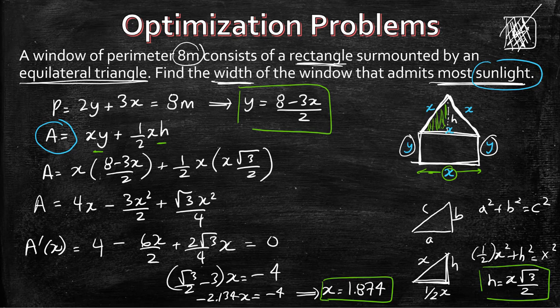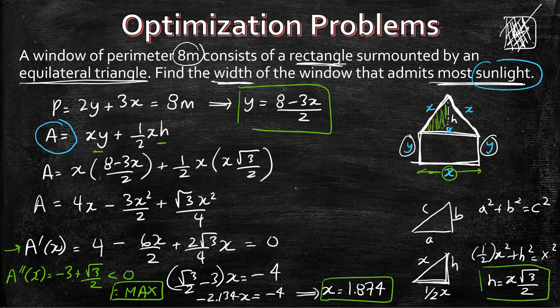There's one last check. In optimization problems we have to confirm that we found a maximum. So we take the second derivative: A double prime of x equals minus 3 plus root 3 over 2, which is less than 0. We know that when the second derivative is less than 0, that is in fact a maximum. So x ≈ 1.874 meters does give the maximum sunlight.